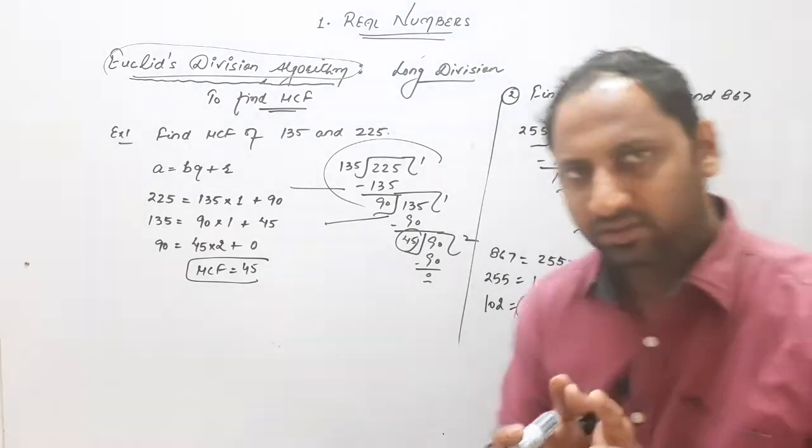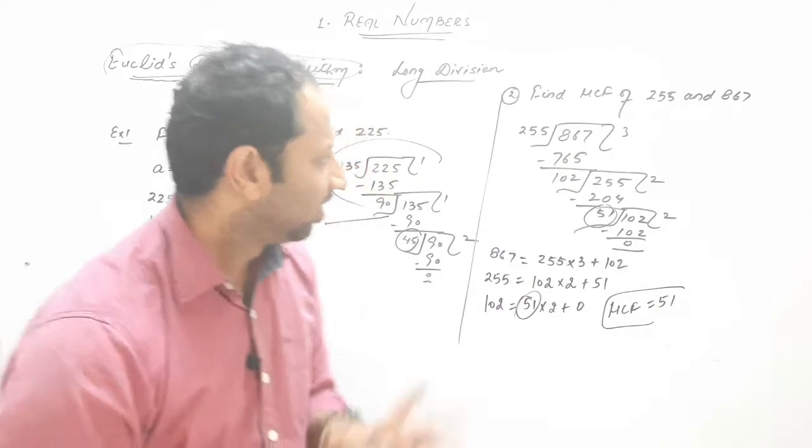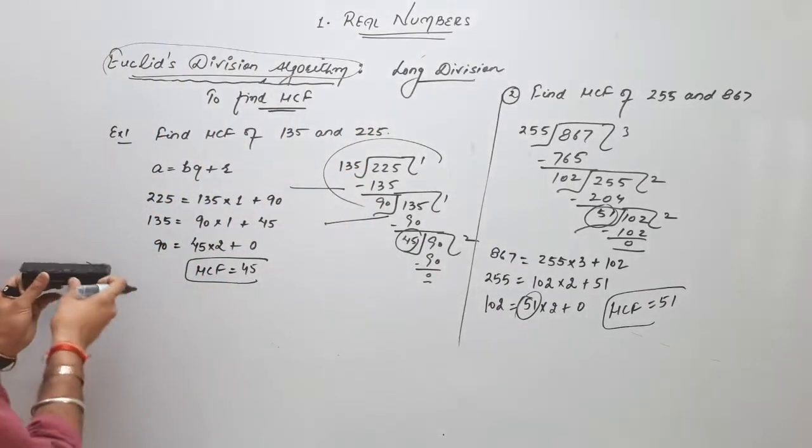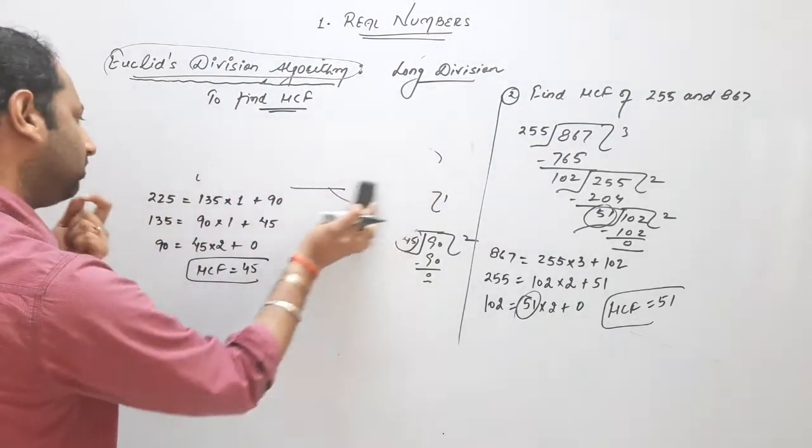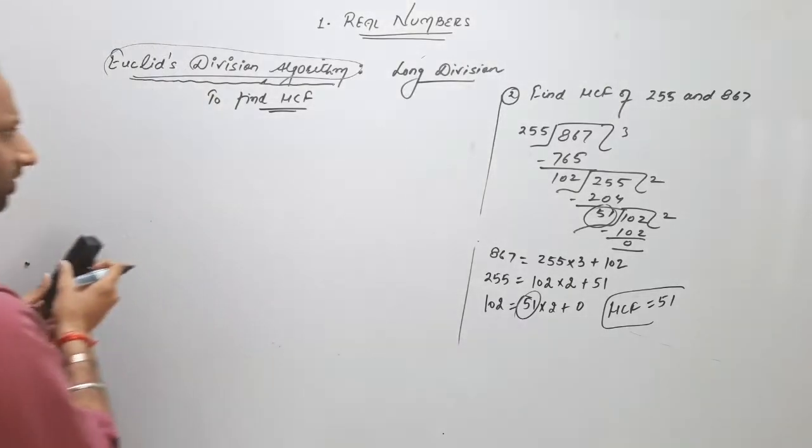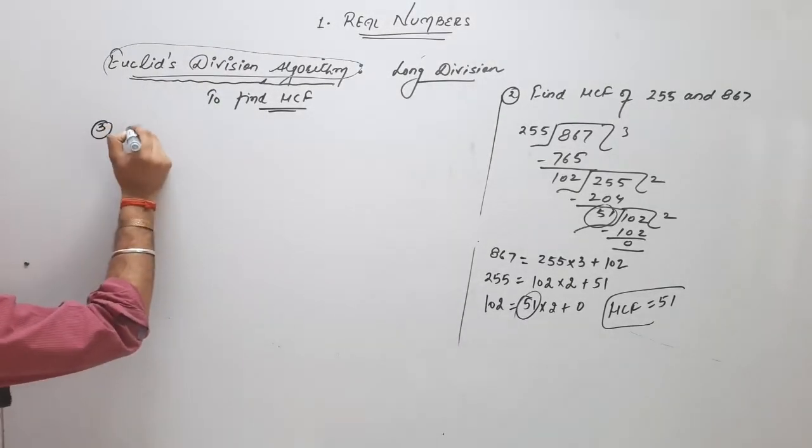So guys, this is your concept to find HCF by Euclid. And I hope there is no problem in this one. And I am now moving to further topic, some distinct topic you can say. Topic is, question, example,